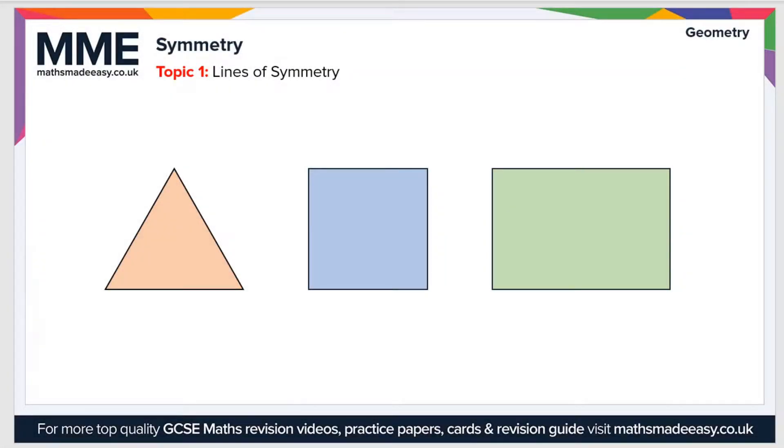Welcome to the Maths Made Easy tutorial on symmetry. In this video we'll cover two different types of symmetry. First, let's look at lines of symmetry. A line of symmetry is a line drawn through a shape which cuts it directly in half so that the two sides are mirror images of each other.